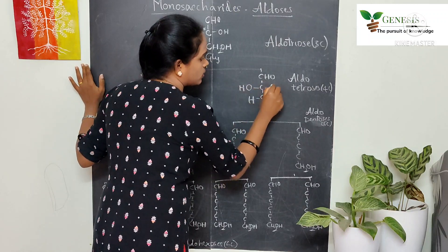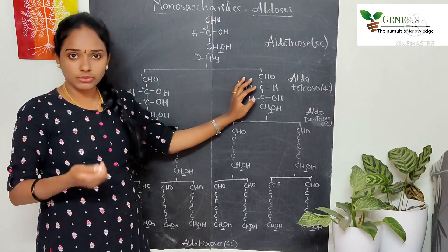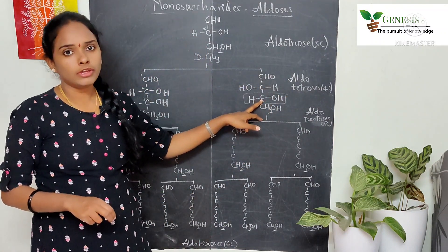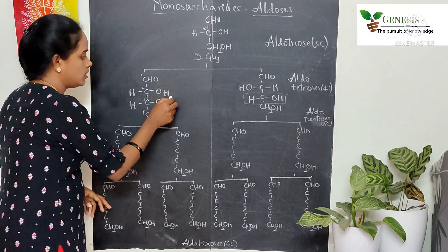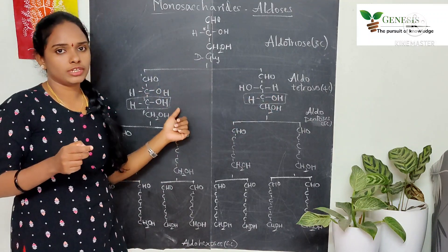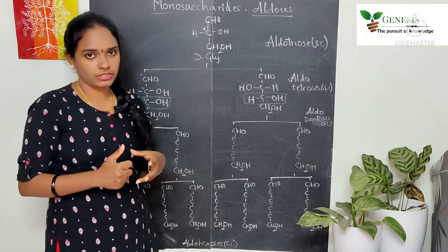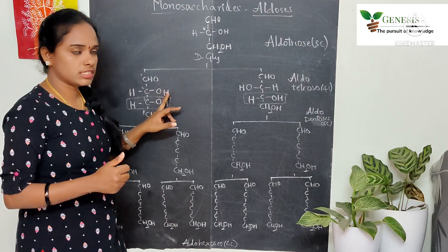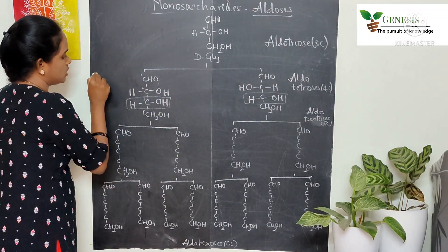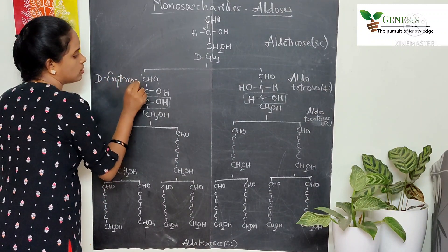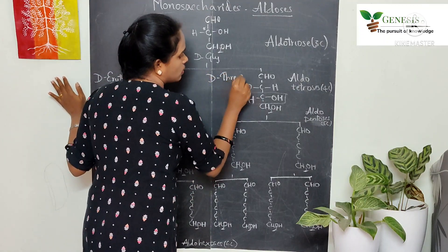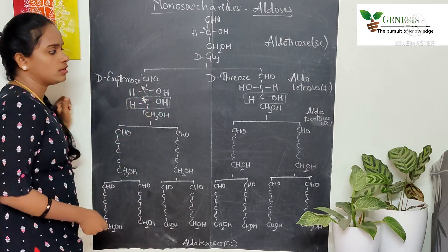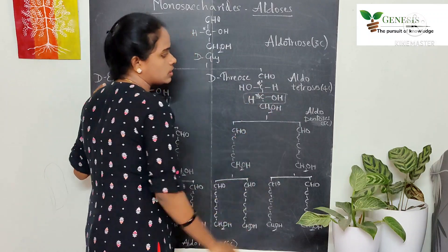We are not writing down the L-forms here. To know whether a compound is a D-form or an L-form, we look at the chiral carbon farthest from the functional group. All these compounds are D-forms. For the first compound, OH must be on the right side, and for the second, OH on the left. Its name is D-erythrose, and these two aldotetroses each contain two chiral carbon atoms.